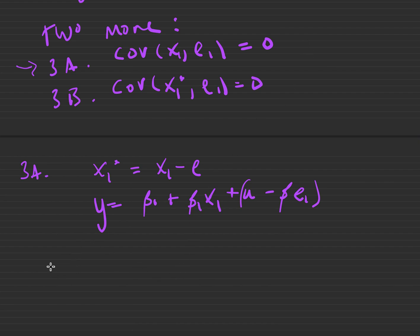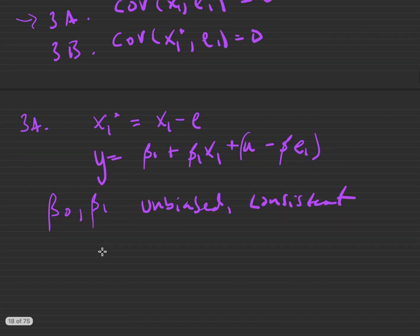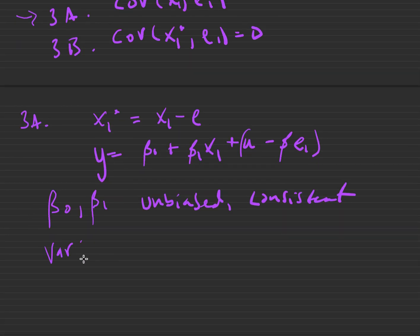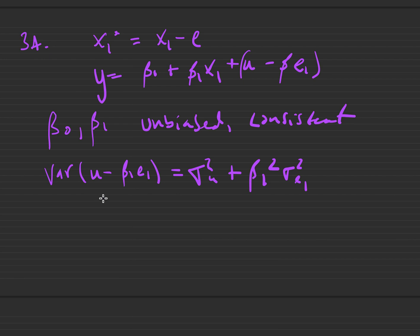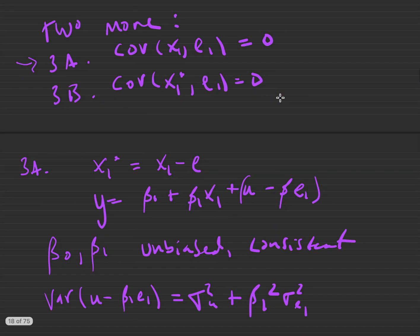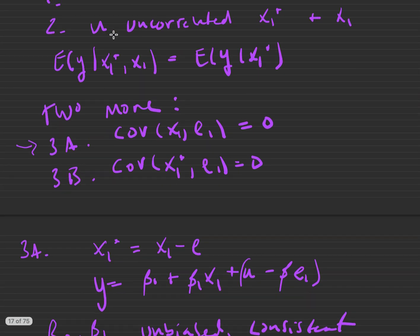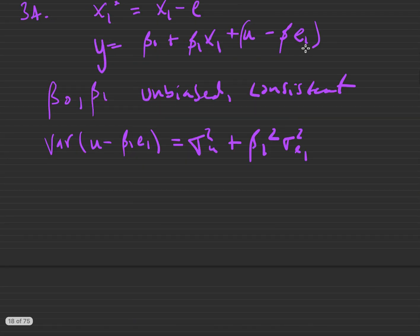Now both u and e1 have zero mean and are uncorrelated with x1 — and so is this whole composite error term — that is by assumption 3a. So under this case, both beta naught and beta 1 are unbiased and consistent. There will be a larger error variance, as the variance of u minus beta 1 times e1 equals sigma squared u plus beta 1 squared times sigma squared e1.